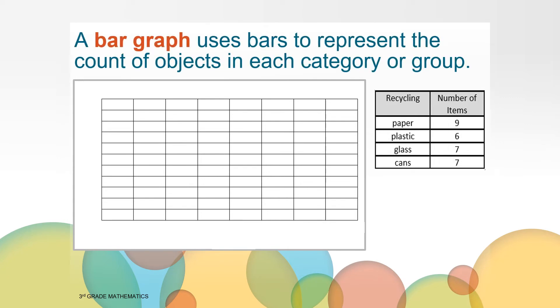A bar graph uses bars to represent the count of objects in each category or group. We'll use the numbers we counted when we sorted the recycling to help us build this bar graph. If you have paper and something to write with, you can follow along as we make this together. We will be using graph paper that has lines already drawn on it to help us organize our work. If you have some at home, that's great. And if you only have plain paper, you can make that work too. Let's get started.